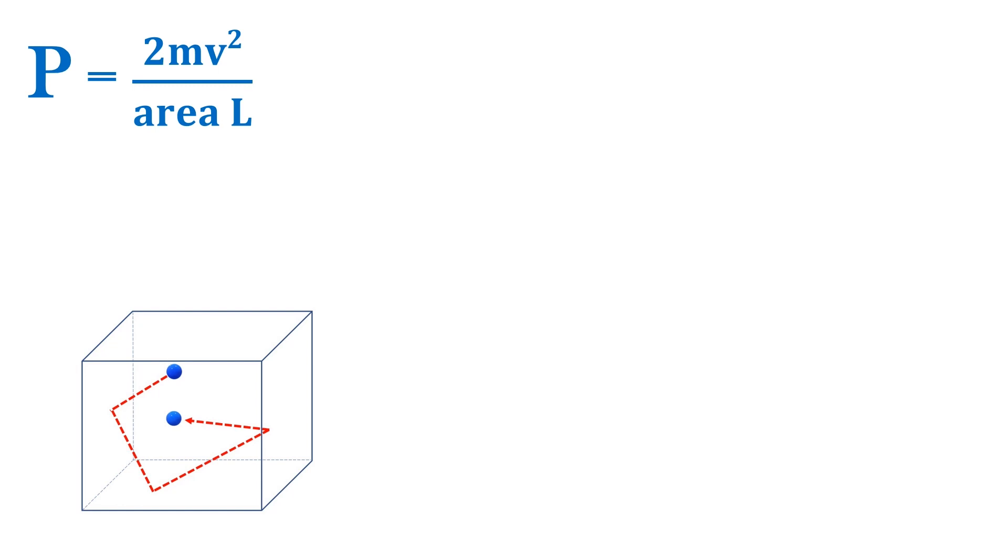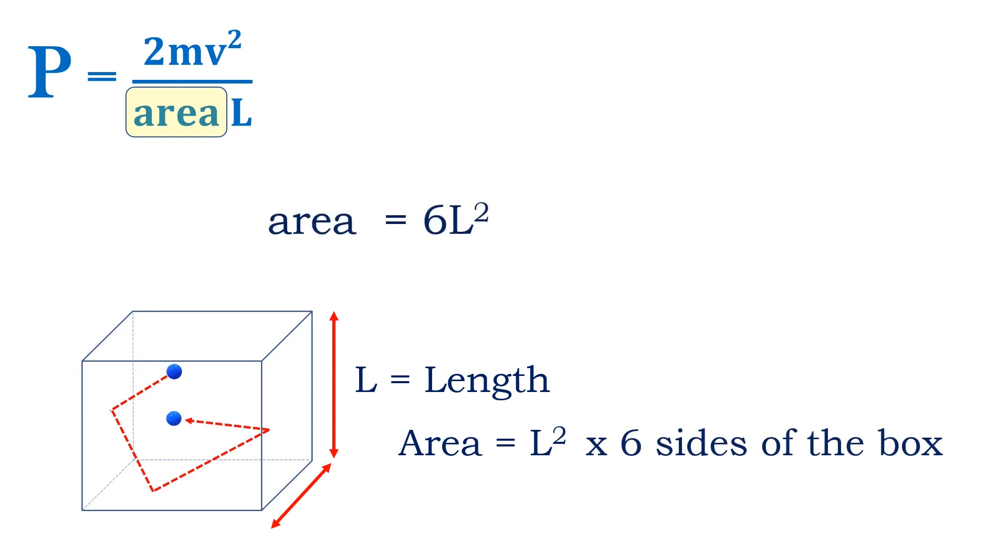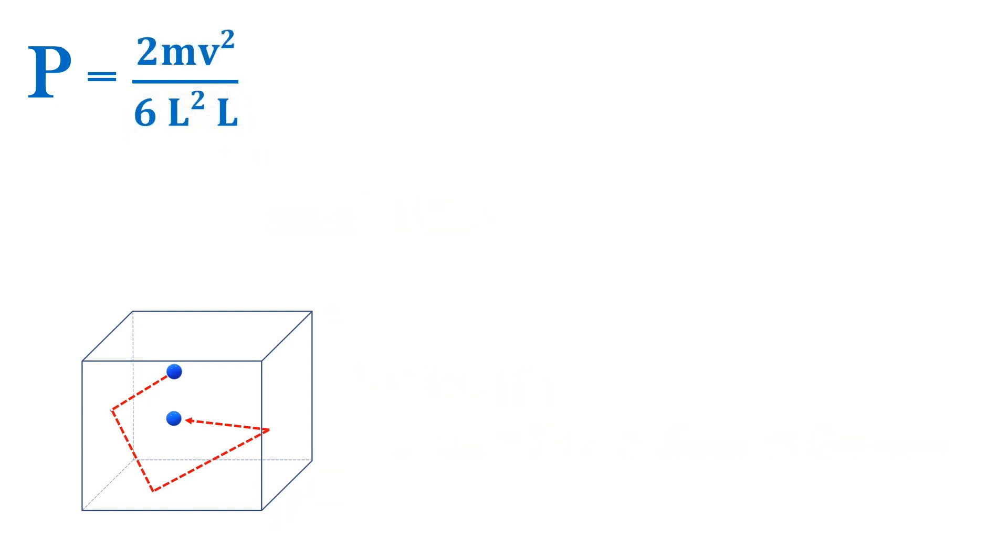So far, we've considered one particle moving in one direction. But of course, it moves in three directions. So we'll assume the velocity term in the equation reflects all three directions. Now we can look at the area term. This is relatively simple. The area would be one side of the box of length L squared. And of course, there are six sides of the box, so the area is equal to 6L squared. Let's insert this into the equation for area. 2 over 6 is 1 third, and the length terms multiply in the denominator to give length cubed.